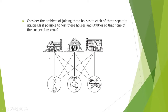It is called K3,3 — a complete bipartite graph with two partitions, each containing three vertices. In a complete bipartite graph, each vertex in one partition is connected to all the vertices in the other partition, and there is no edge between vertices within the same partition.